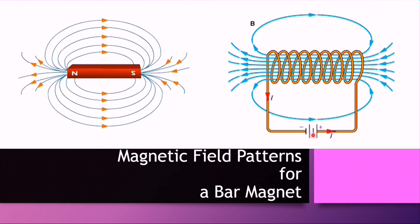If you reverse the direction of the current flow by changing the terminal of the battery, the direction of the magnetic field will also reverse. It can be seen that the magnetic field outside the solenoid has the same shape as the field around a bar magnet.